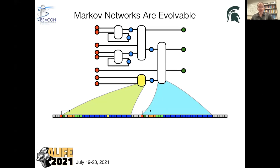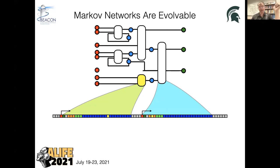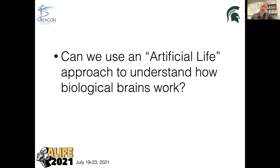Mutations can change both the logic and where you read or write to. These networks, as they evolve, are very sparse compared to standard neural networks, and they process signals in time. In that way, the agent carrying this brain can also behave in time — unlike an ANN, which looks at one time point and makes a decision. These brains have to make decisions continuously and receive information all the time. The question I'm asking is: can we use an artificial life approach using this type of neuroevolution on embodied agents to understand how actual biological brains work?